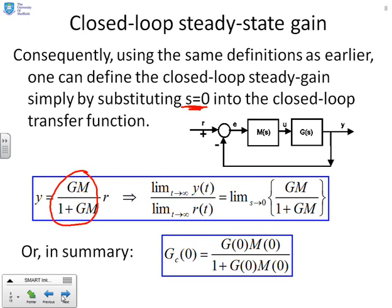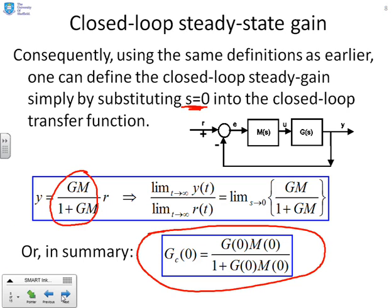Setting S equals zero gives the formula: G of zero times M of zero divided by 1 plus G of zero times M of zero. All I've done is replaced every S by zero. That gives you the steady state gain of this simple closed loop.